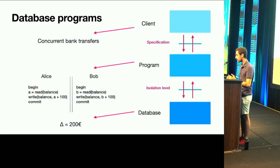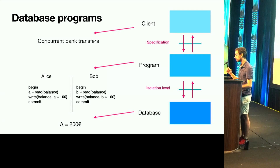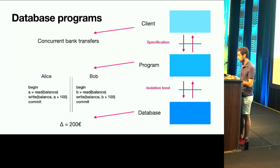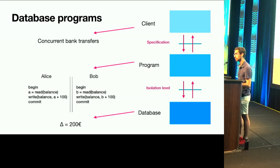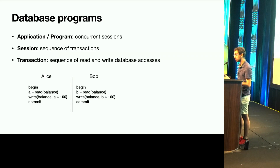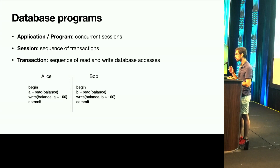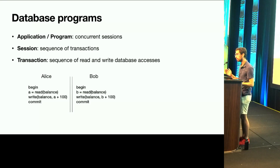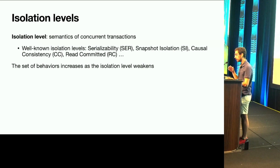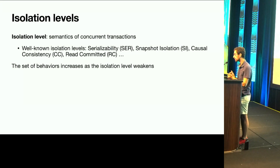The setting is as follows. We have a program — Alice and Bob — that must comply with the specification given by the client, but also take into account the isolation level given by the database. More formally, programs are collections of concurrent sessions, where each session is a sequence of transactions, and a transaction is a sequence of read and write database accesses, one access per row read. Alice and Bob both read the balance of Claire and then write 100 euros more to the balance. These programs run on a database with a particular isolation level set, which defines the semantics of concurrent transactions. Well-known isolation levels are serializability, snapshot isolation, causal consistency, and read committed. In general, the set of behaviors increases as isolation levels become weaker.